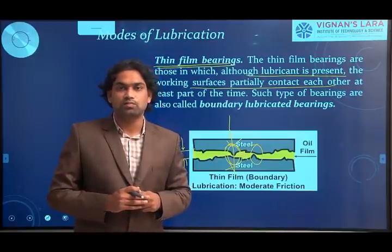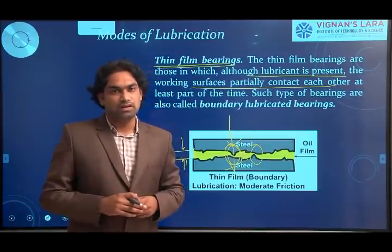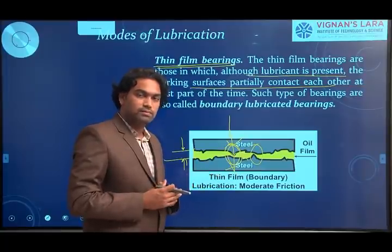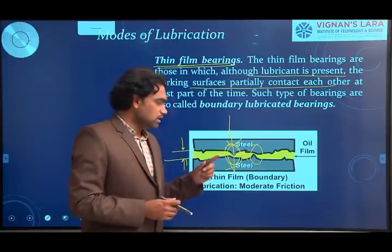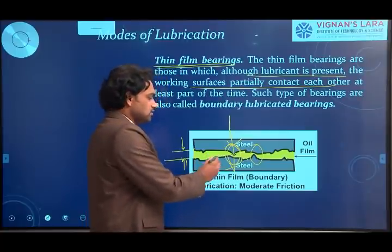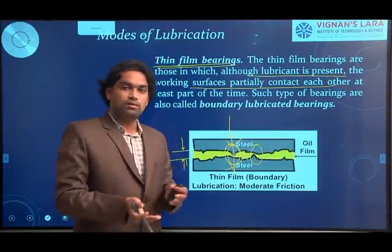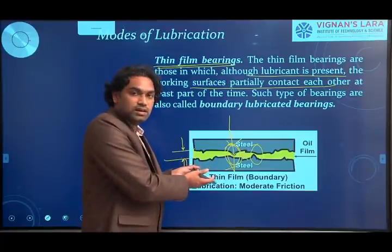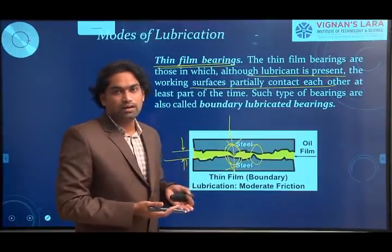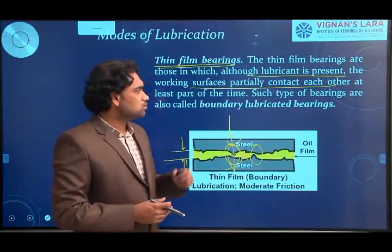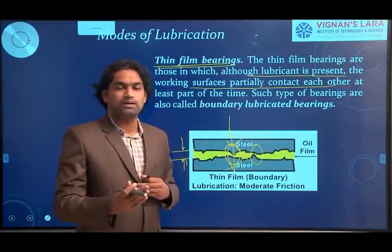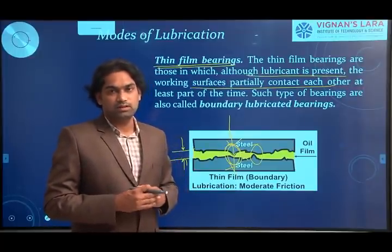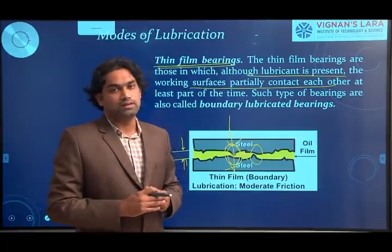In thin film bearings, there is a chance of metal-to-metal contact. Whenever there is direct metal-to-metal contact, metal friction is present. So in thin film bearings, metal friction is present as well as viscous friction. Comparing with thick film: the amount of friction in the thin film case is relatively much greater compared to thick film bearings. In thick film, the surfaces are completely separated by the lubricant layer; in thin film, the surfaces can be partially in contact even with the presence of lubricant.